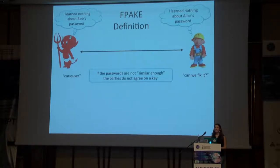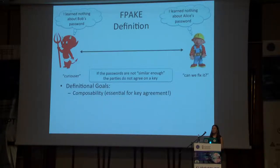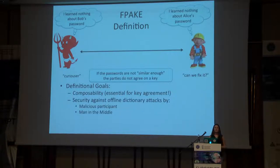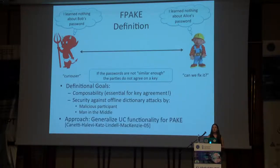There are a few complications in defining a Fuzzy PAKE. The first is that for any key agreement protocol, it's very important that the protocol be composable — key agreement is never the ultimate goal, and you probably want to then use that key in a different protocol, so you need the protocol to remain secure even when other things are also being executed. The second difficulty is that, just like PAKE, we really need to be secure against offline dictionary attacks. We're dealing with low-entropy passwords, so we want to make sure that malicious participants and men in the middle, even if they've saved a transcript, can't use it to test their guesses.